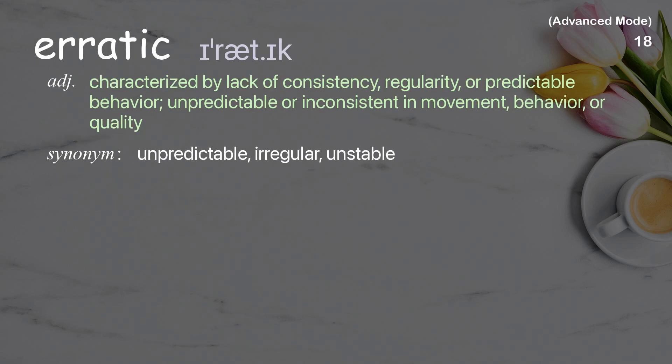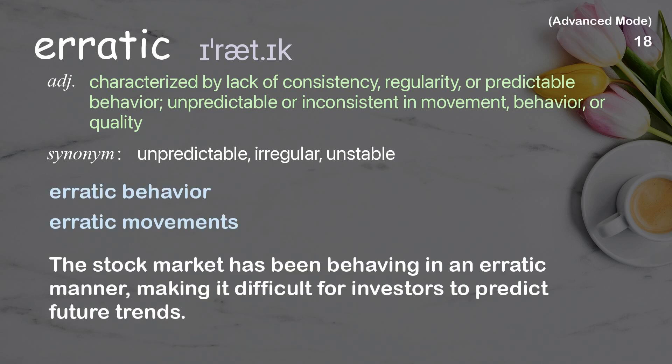Erratic: Characterized by lack of consistency, regularity, or predictable behavior; unpredictable or inconsistent in movement, behavior, or quality. Examples: Erratic behavior, Erratic movements. The stock market has been behaving in an erratic manner, making it difficult for investors to predict future trends.